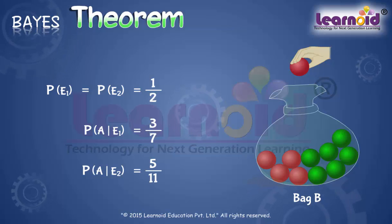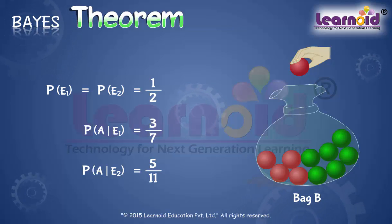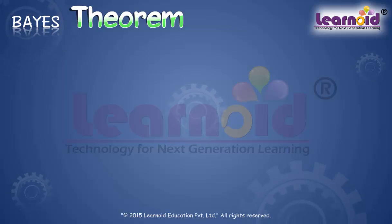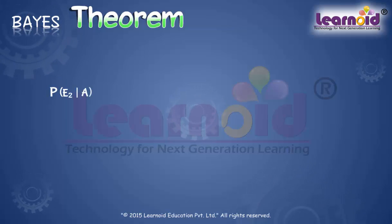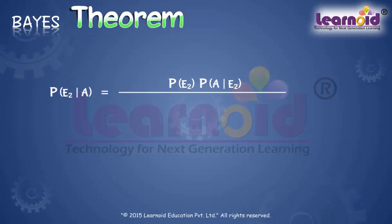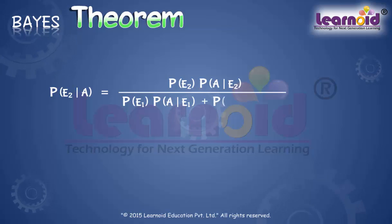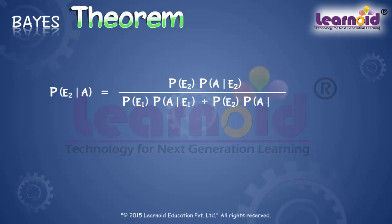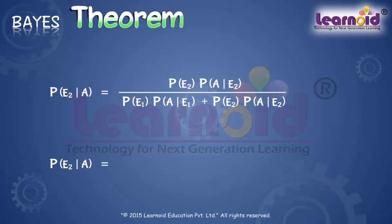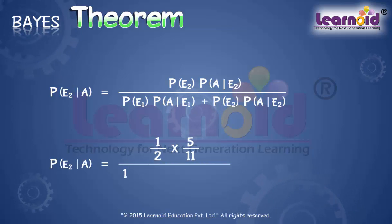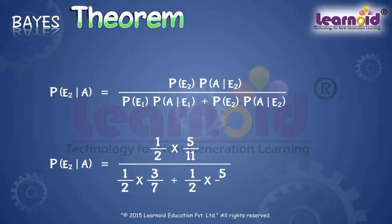The probability of drawing a red ball from bag B is the conditional probability P(E2|A). By Bayes' Theorem, P(E2|A) is given by P(E2) times P(A|E2), divided by P(E1) times P(A|E1) plus P(E2) times P(A|E2). Substituting all values of the probabilities, we get P(E2|A) equal to 35/68.